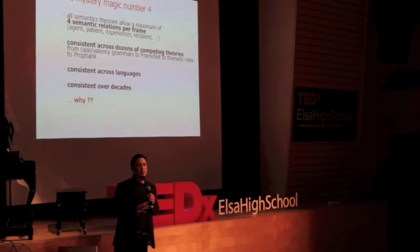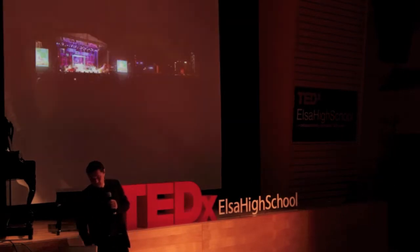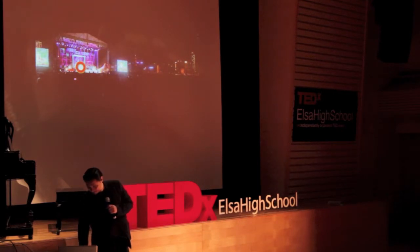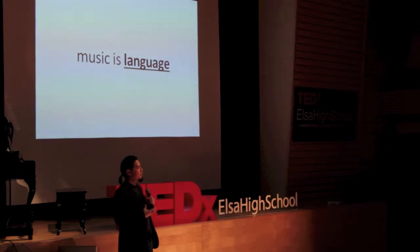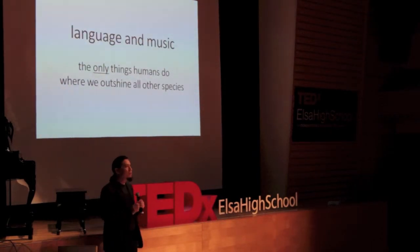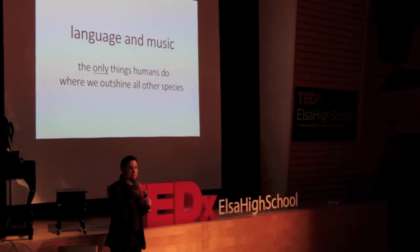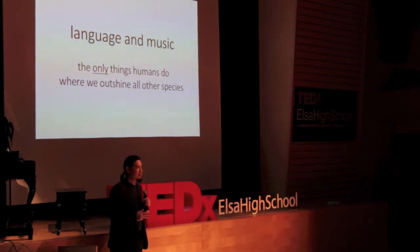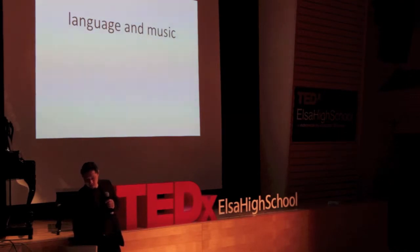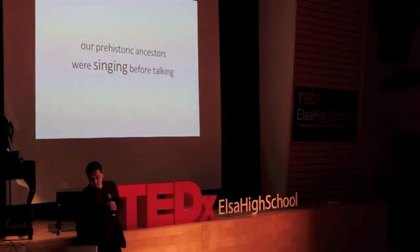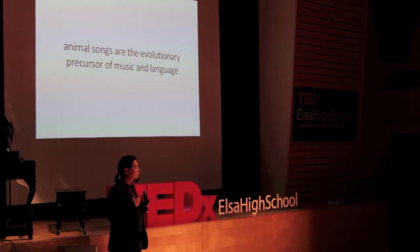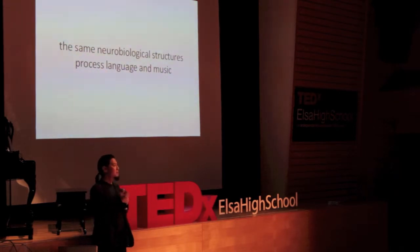Let me turn around and come at this from a musical perspective. This is my group, called Reorientate, performing in Hong Kong — that's me there. From this perspective, music is a kind of language. In fact, language and music are the only things that we as humans do better than all other species. We don't run faster, smell better, climb trees better, or swim better — we are actually a pretty pathetic species, except for this. Language and music define humanity. Our prehistoric ancestors were singing before they were talking, and animal songs are the evolutionary precursor of music and language. Plus, it's the same neurobiological structures responsible for processing 99% of language and music. Out of the evolutionary refinement of these language abilities, human intelligence emerged.